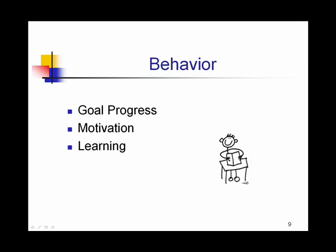Both the personal factors and the environmental factors lead to certain behaviors. Those behaviors monitor whether or not the goal will progress. The behavior may result in more motivation for learning, so it depends on what happens with those other factors whether or not the student will proceed with learning.